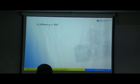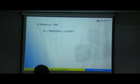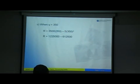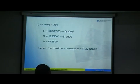For the last part, find the maximum revenue. We've proven Q equals 350 maximizes revenue. Substitute Q equals 350 into the revenue function: 3,500 times 350 minus 5 times 350 squared gives 1,225,000 minus 612,500. Therefore the maximum revenue is 612,500.